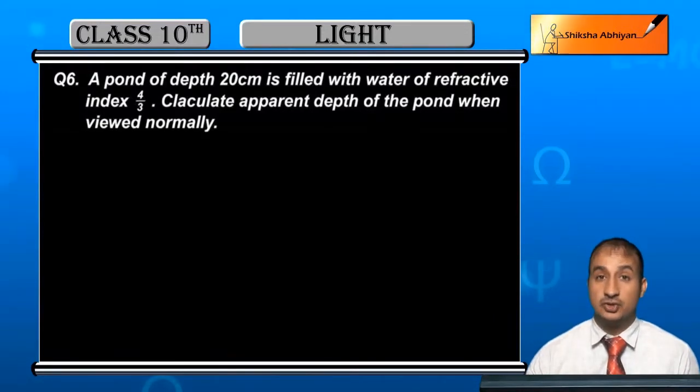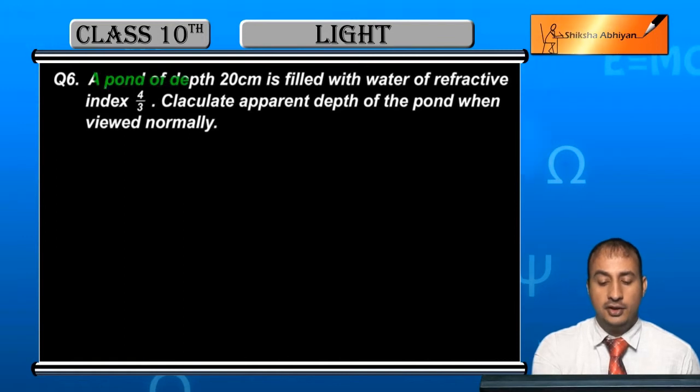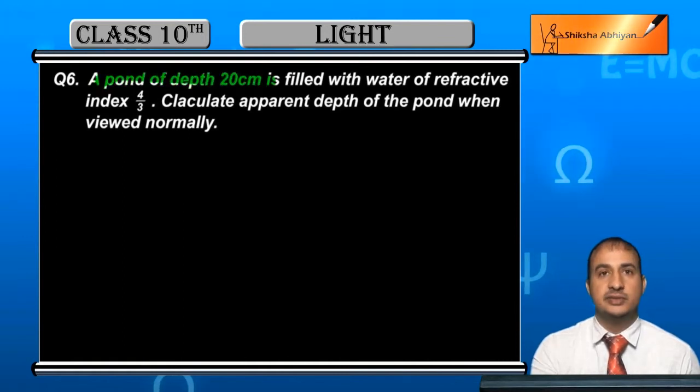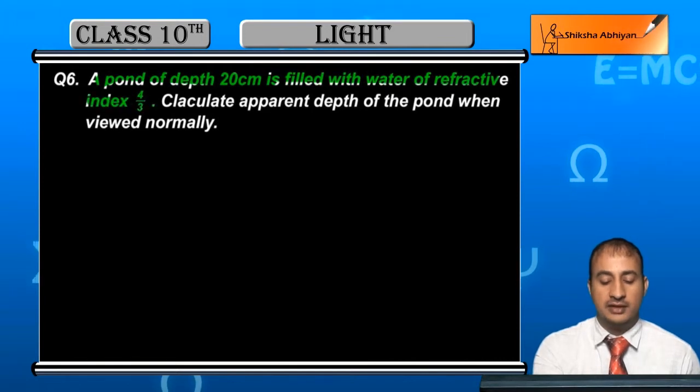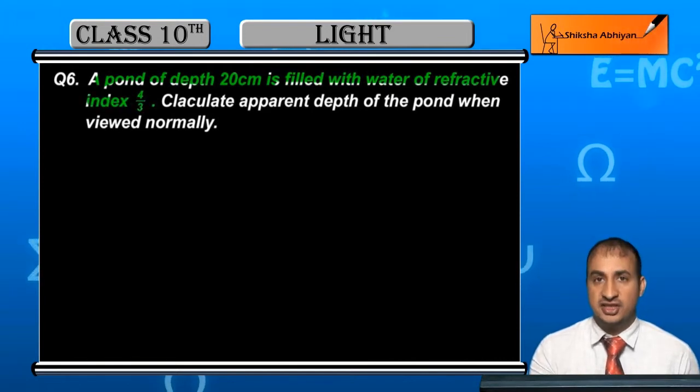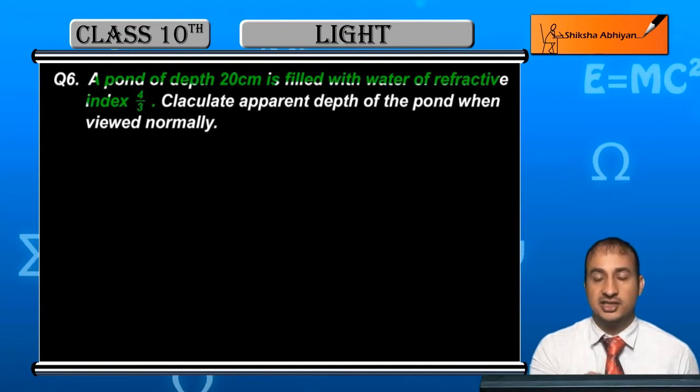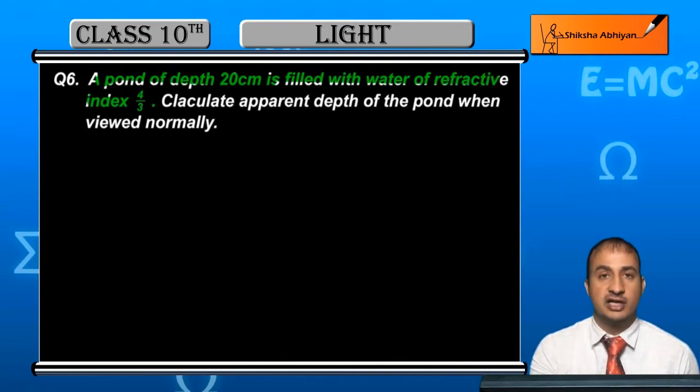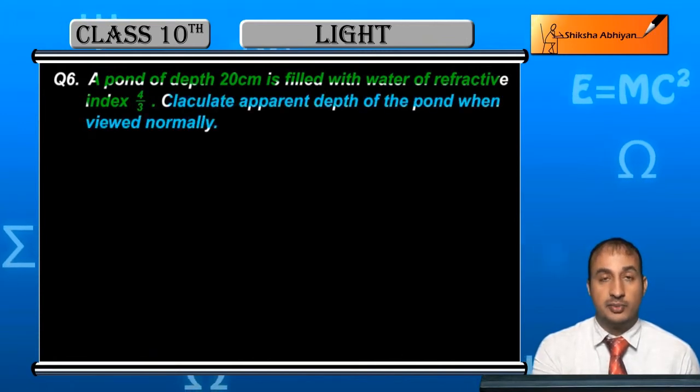Now students, see question 6. A pond of depth 20 cm is filled with water of refractive index 4 by 3. Calculate the apparent depth of the pond when viewed normally.